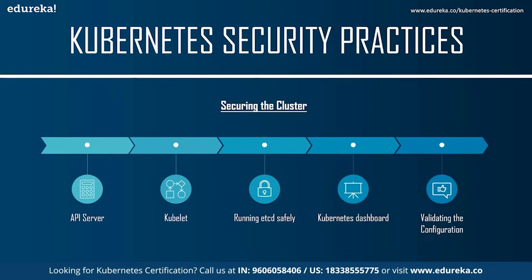If unauthorized users can access the kubelet API on any node to execute code, it is possible to gain control of the entire cluster. To prevent this: limit API access to authenticated requests (anonymous requests are ignored), and leverage access control to stop unauthorized actions. Configuration options include disabling anonymous access with `--anonymous-auth=false`, setting `--authorization-mode` to something other than AlwaysAllow, including NodeRestriction to limit kubelet permissions, and setting `--read-only-port=0` to turn off the read-only port.